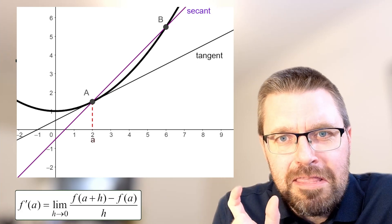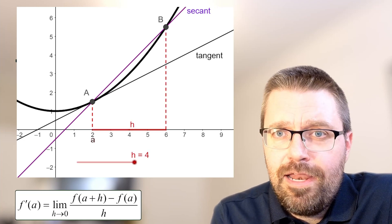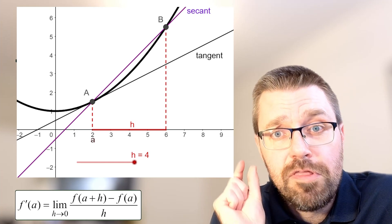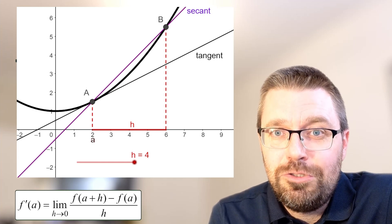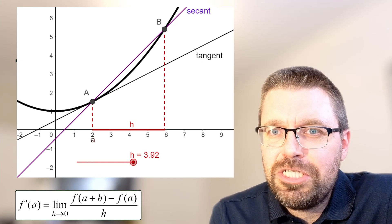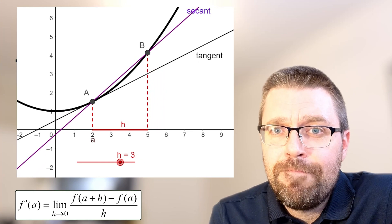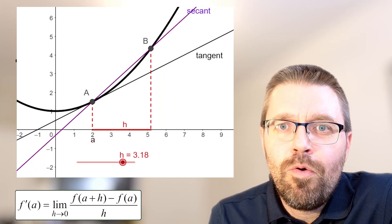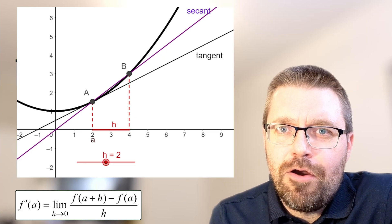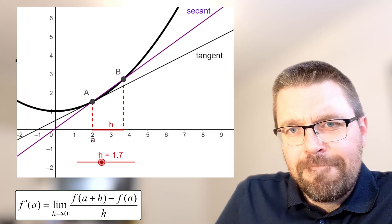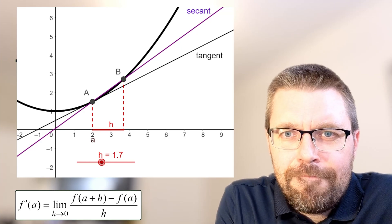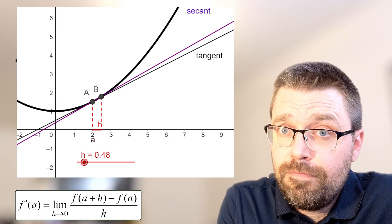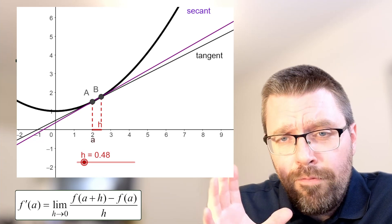If we call the distance between these two points h, and then change the value of h closer and closer to zero, then point B starts to move. We take h and change this value, and we see that point B is moving towards point A. The slope of the secant is also changing. When h approaches zero, the slope of the secant is closing in on the slope of the tangent line. When h is almost zero, like 0.48, the secant and the tangent line are almost identical.